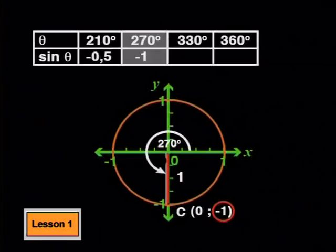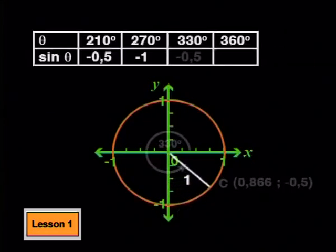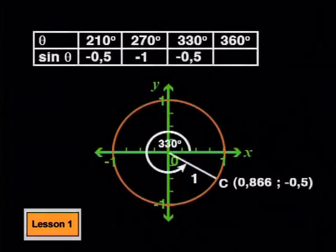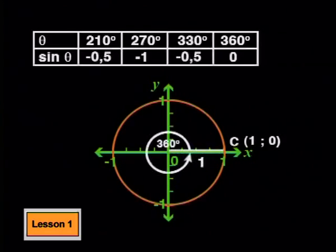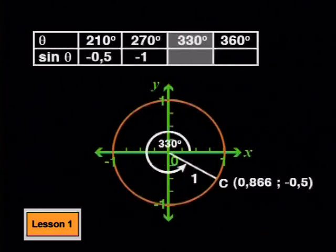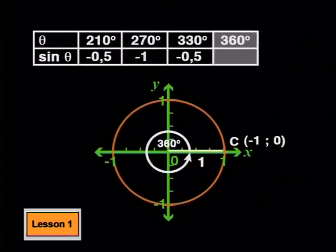The negative sign on these values tells us that the points are below the x-axis. And now, for the last quarter of the line segment's rotation around the origin. As the line segment rotates from 270 degrees through to 360 degrees, sin theta increases from negative 1 up to 0. At theta equal to 330 degrees, sin theta has increased to negative 0.5. And at 360 degrees, sin theta is 0.